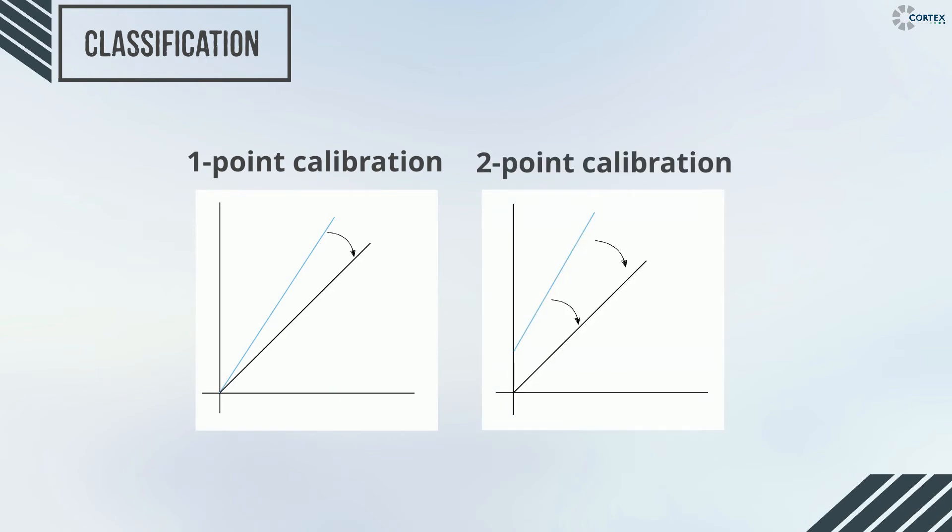Calibration in Cortex devices are classified into a one-point and two-point calibration. Both calibrations look at the linear relationship between a defined gas concentration and the measured gas signal that is collected from the sensor.